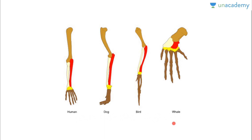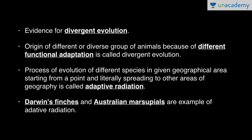Homology is evidence for divergent evolution. Divergent evolution is the origin of different or diverse groups of animals because of different functional adaptation. As seen in homologous organs, they have common origin but because of different functional adaptation they perform different functions, while their internal structure remains the same — that is why homologous organs are evidence for divergent evolution.